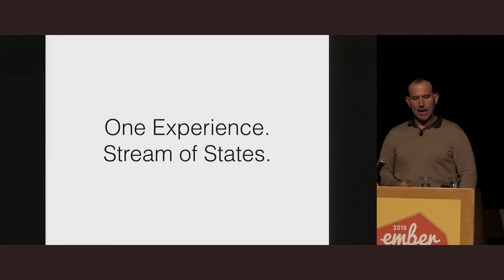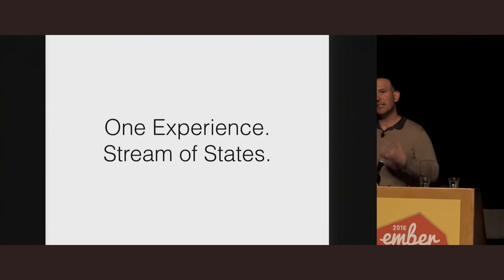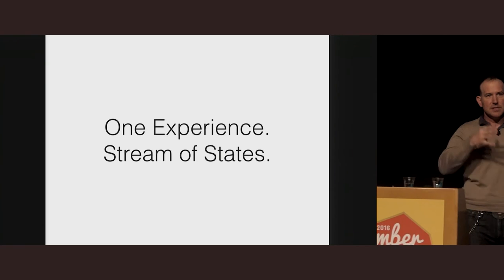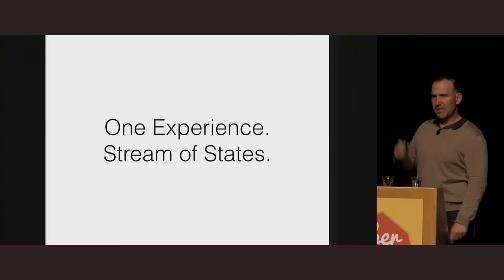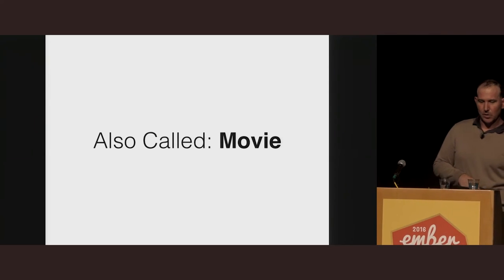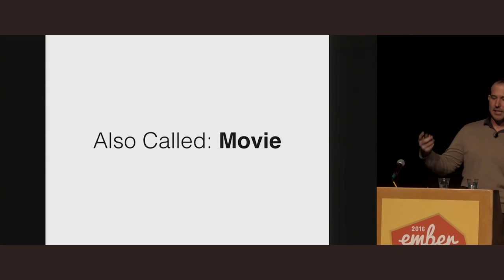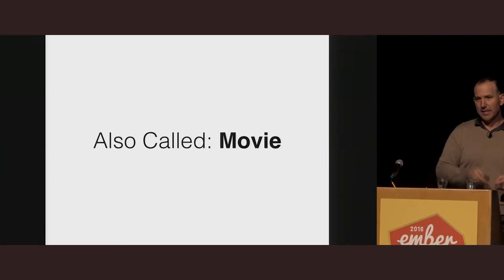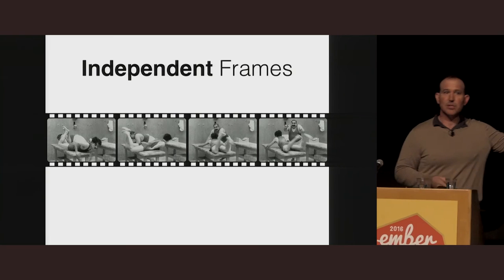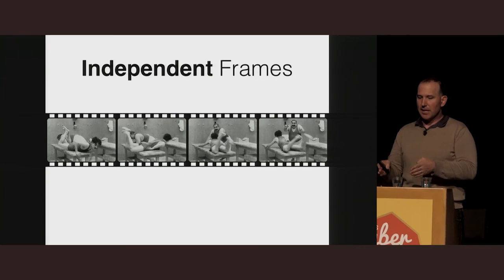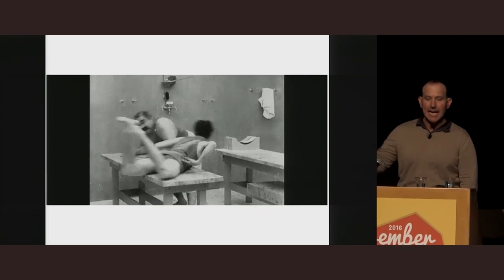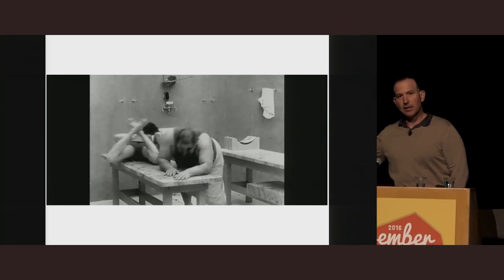By replacing that model each time, it ceases to become a single object so much as a stream of discrete states that, when rendered in succession, yield this seamless experience. As it turns out, there's a very precise word for this sequence of discrete states in computer science and category theory — it's called a movie. We observe the movie as a single experience, but we know that the content of the movie is subdivided into discrete static frames. Each frame has clearly defined bounds — a start and a finish — and each frame exists completely and totally independent of all the others.